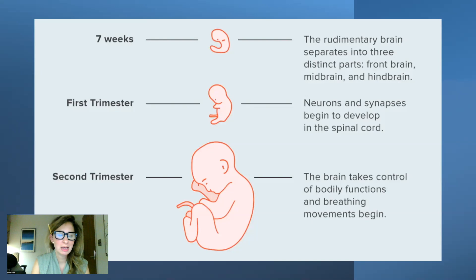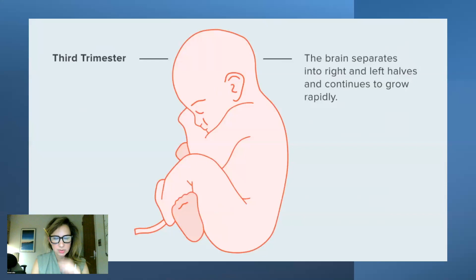The brain is amazing. At around seven weeks, the brain separates into three big sections: the forebrain, the midbrain, and the hindbrain. In the first trimester, neurons and synapses are beginning to develop in the central nervous system. In the second trimester, the brain starts to take control over a lot of functions. In the third trimester, the brain starts to separate into the right and left hemispheres and continues to grow really rapidly.